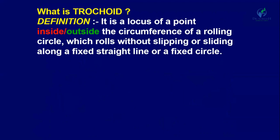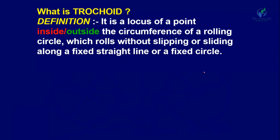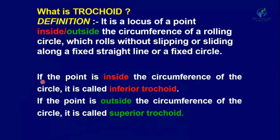A trochoid is the locus of a point inside or outside the circumference of a rolling circle which rolls without slipping or sliding along a fixed straight line or a fixed circle. In the case of cycloid, epicycloid, and hypocycloid, the point is on the circumference. If the point P is outside the circumference, the path is known as a superior trochoid; if it is inside the circumference, it is called an inferior trochoid.